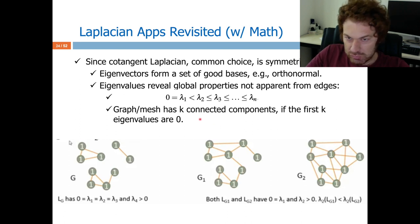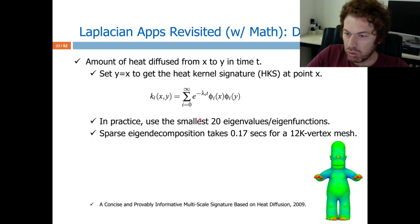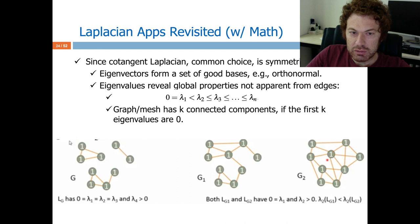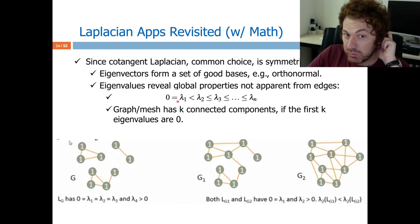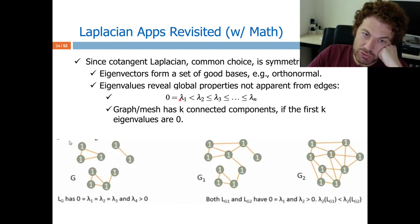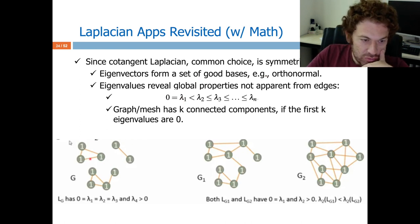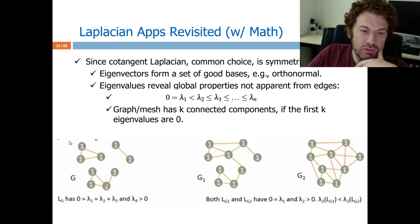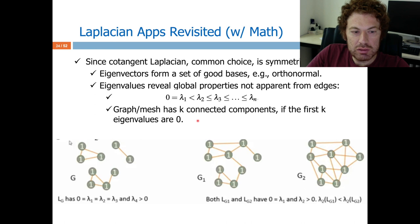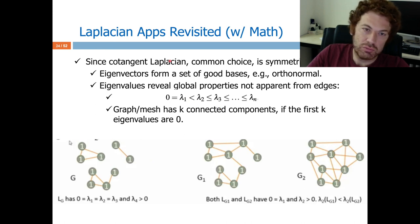In the general case with only one connected component — like the Homer example — only lambda_1 will be zero, and the corresponding eigenvector will be constant. But if I have three components, then lambda_1, lambda_2, and lambda_3 will all be zero. You can immediately infer this by just looking at the eigenvalues of the Laplacian, which is a very cool thing.